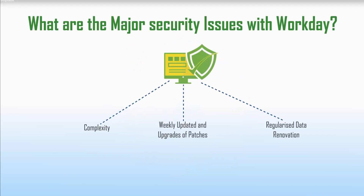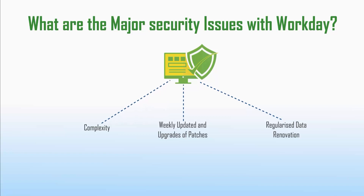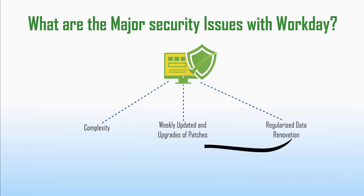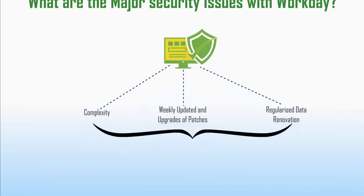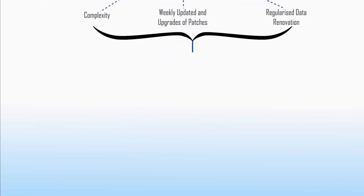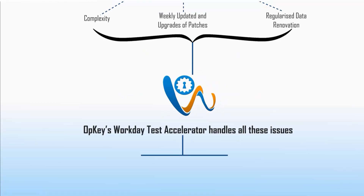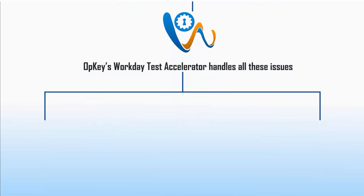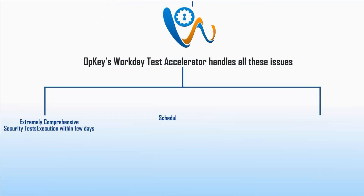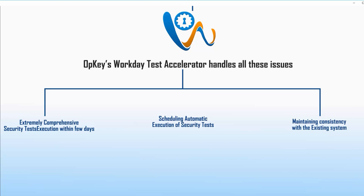What are the major security issues with Workday? The security configurations in Workday can be highly complicated to test thoroughly. Manual testing cannot remove the risk of impact from weekly patches. It is very difficult to make changes to a complex security configuration due to the threat of unexpected issues. Opkis Workday Test Accelerator handles all these issues — it allows users to run extremely comprehensive security tests within a few days, and the security tests can be executed automatically every week once security configuration changes occur.